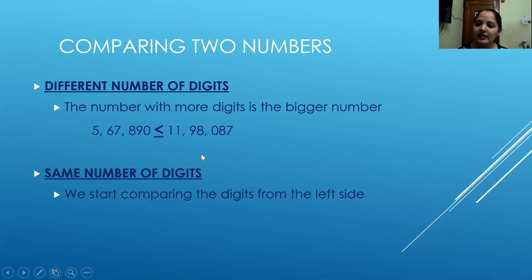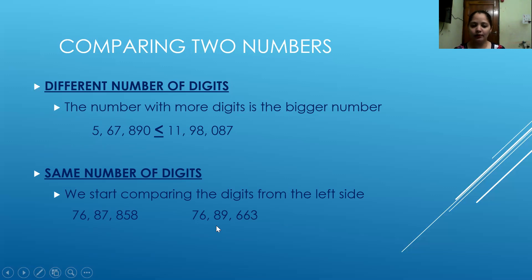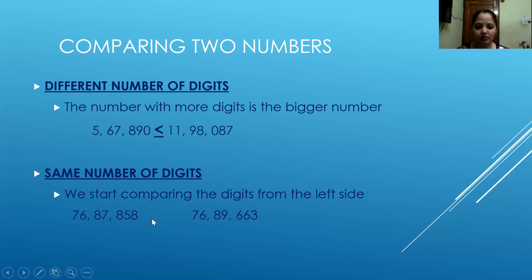But in case I have the same number of digits for both numbers, then we start comparing the digits from the left side. Let's take an example. Both numbers are having the same number of digits, that is seven. The first number also has seven digits, and the second number also has seven digits. So I will start comparing the numbers digit by digit from the left side. The first digit from the left side for the first number is seven. For the second number also, it is seven. In that case, I will move to the second digit — six. Here also the second digit is six.